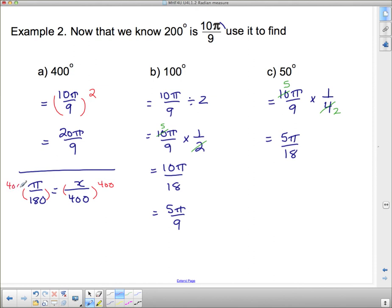...we multiply both sides by 400. Multiply this side by 400. Those cancel, so I'm left with just x on this side, which is what I wanted the radians to be.